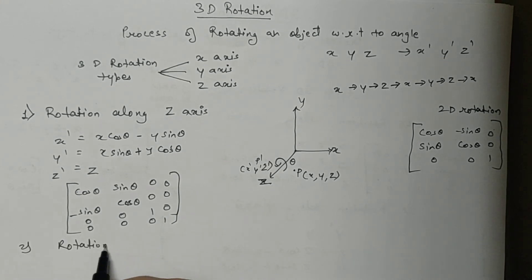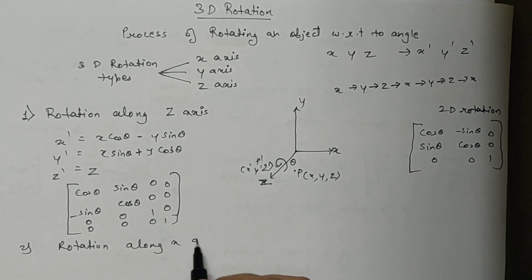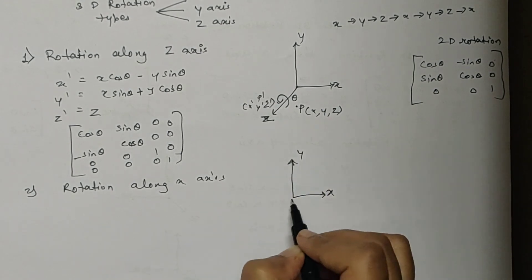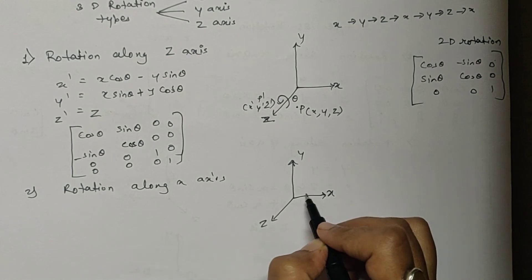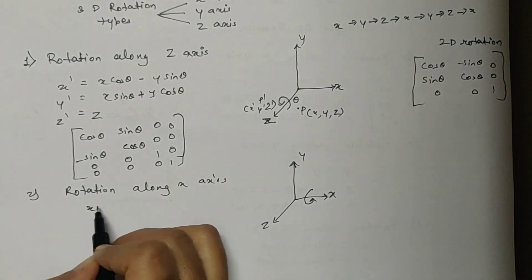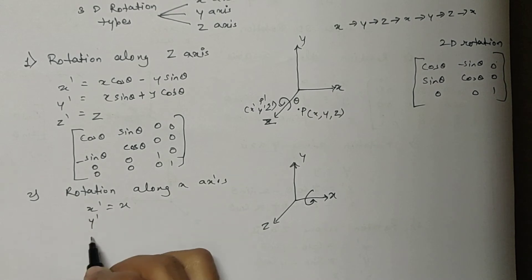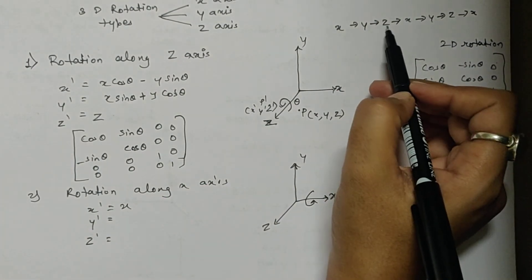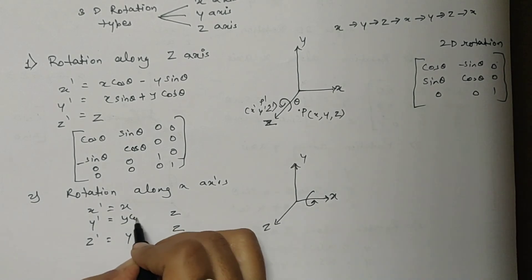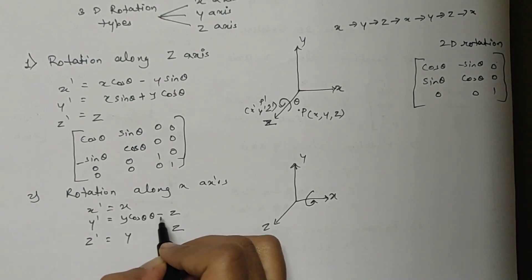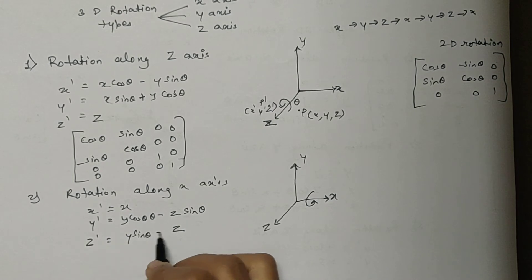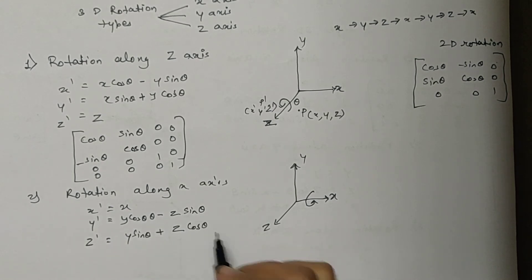Next, let's calculate rotation along x axis. Suppose this is my x axis, this is my y axis, and this is my z axis. I want to rotate the object along x axis, so my x will remain the same — x dash equals x. I want to calculate y dash and z dash. Using the chain trick, after x I have y and z, so I write y and z. The formula becomes: y dash equals y cos theta minus z sine theta, and z dash equals y sine theta plus z cos theta.